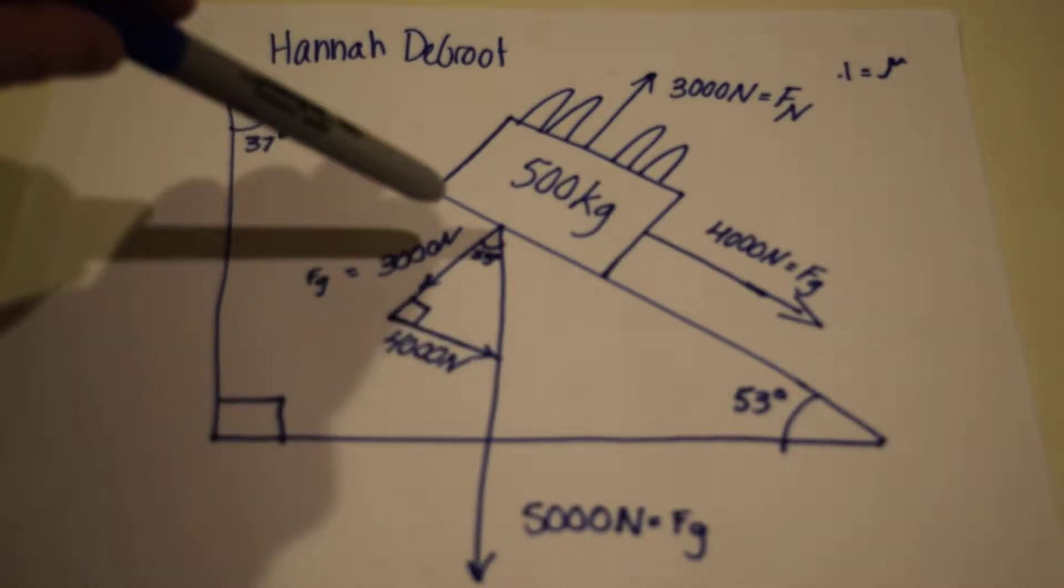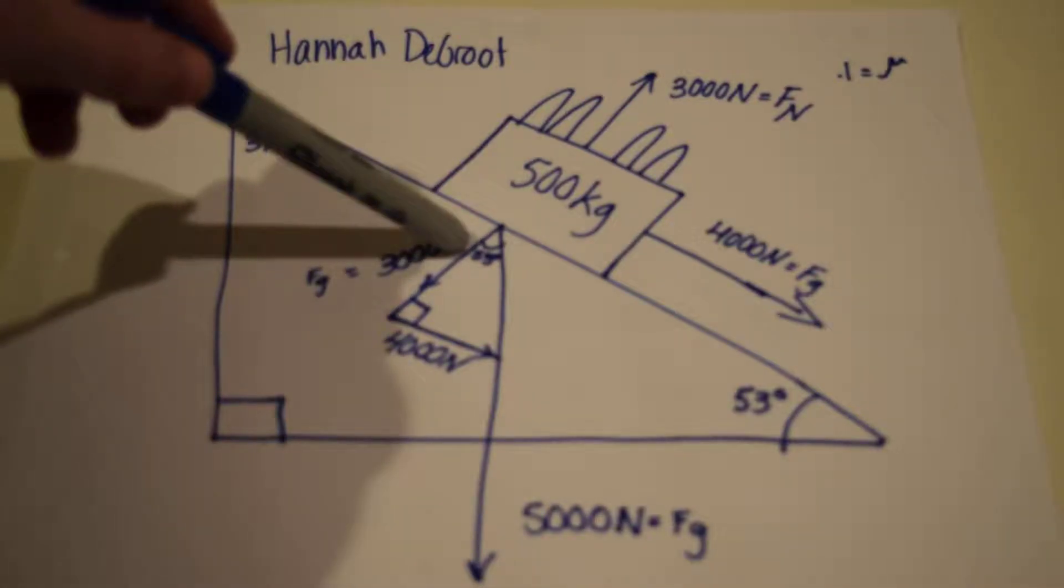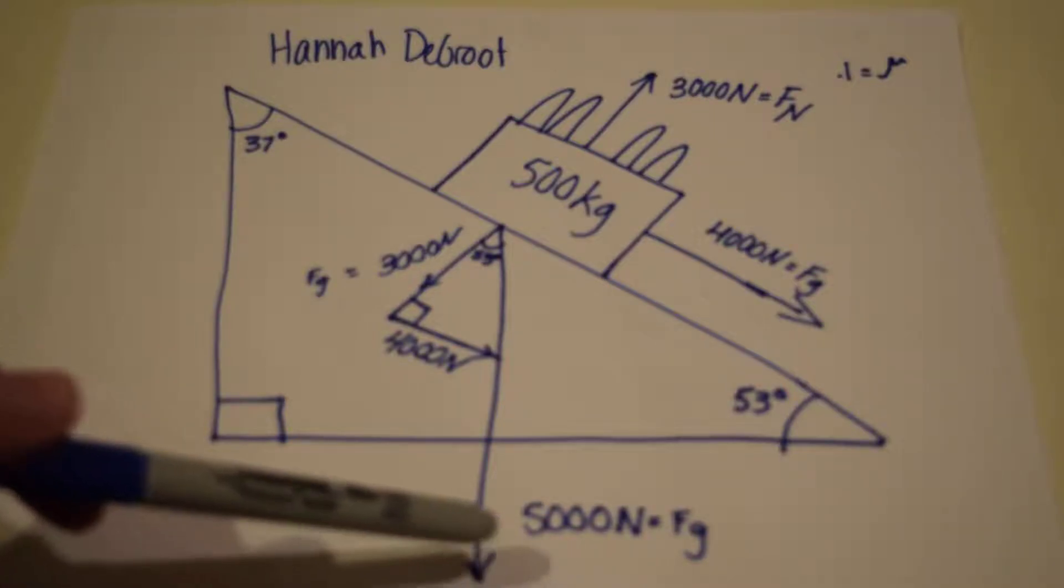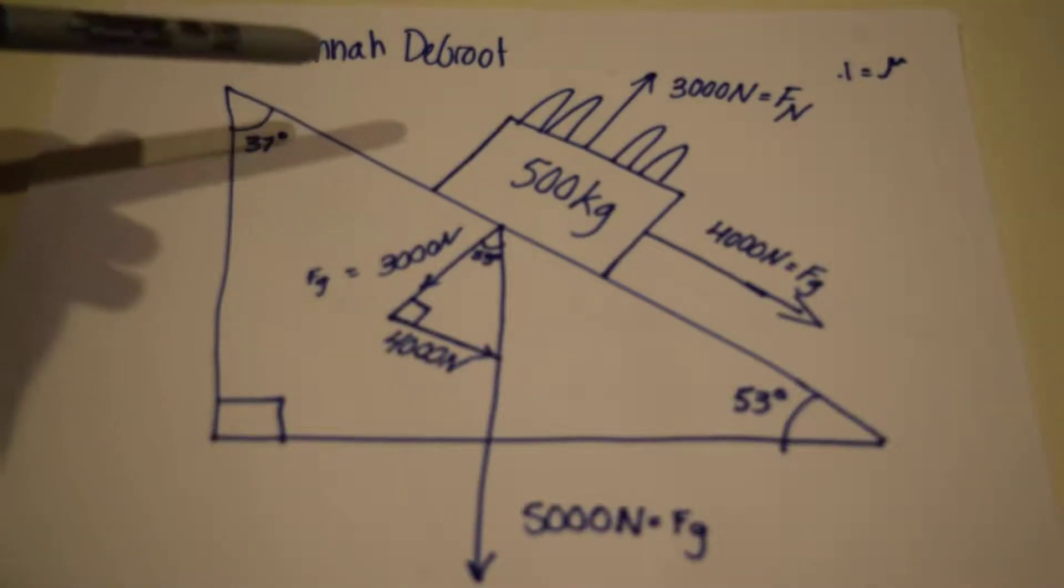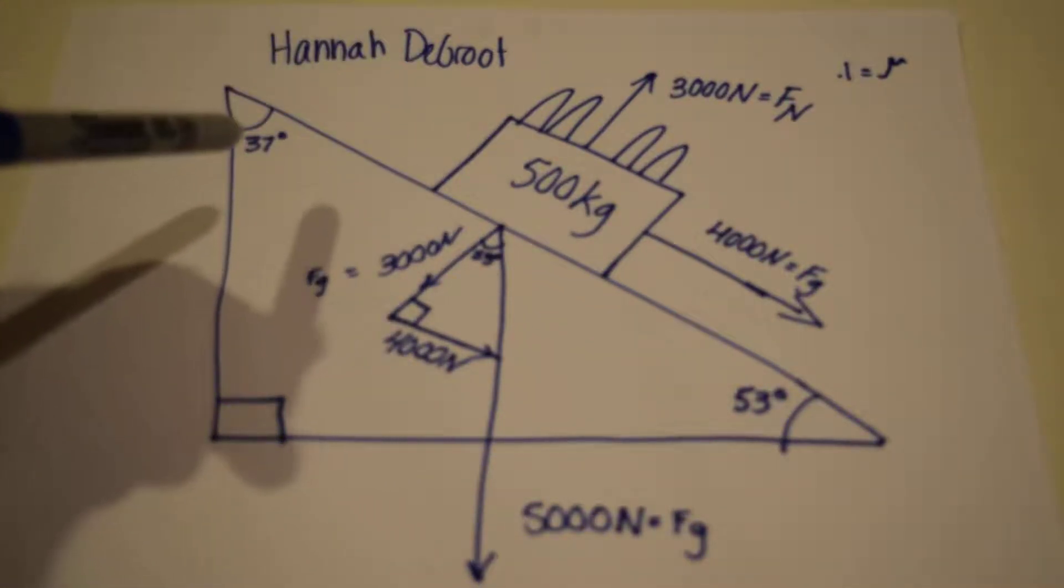So from that, we then know that the total gravity force is 5,000 newtons and from there we have to split it up if we want to find the acceleration that they're each experiencing.